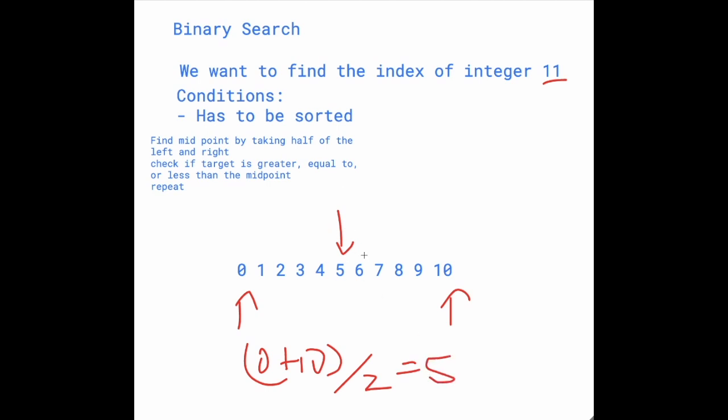Then we check if it's greater than or equal to or less than or equal to the target variable. And if it is, let's say if it's greater than, then we know it can't be here. So we can just effectively eliminate this and search this area.